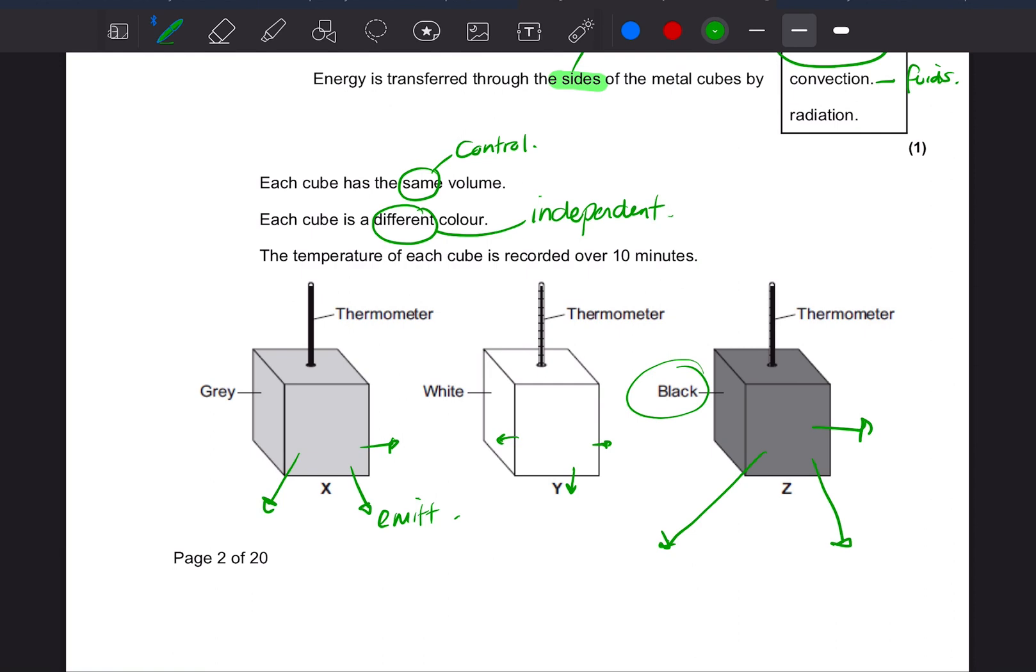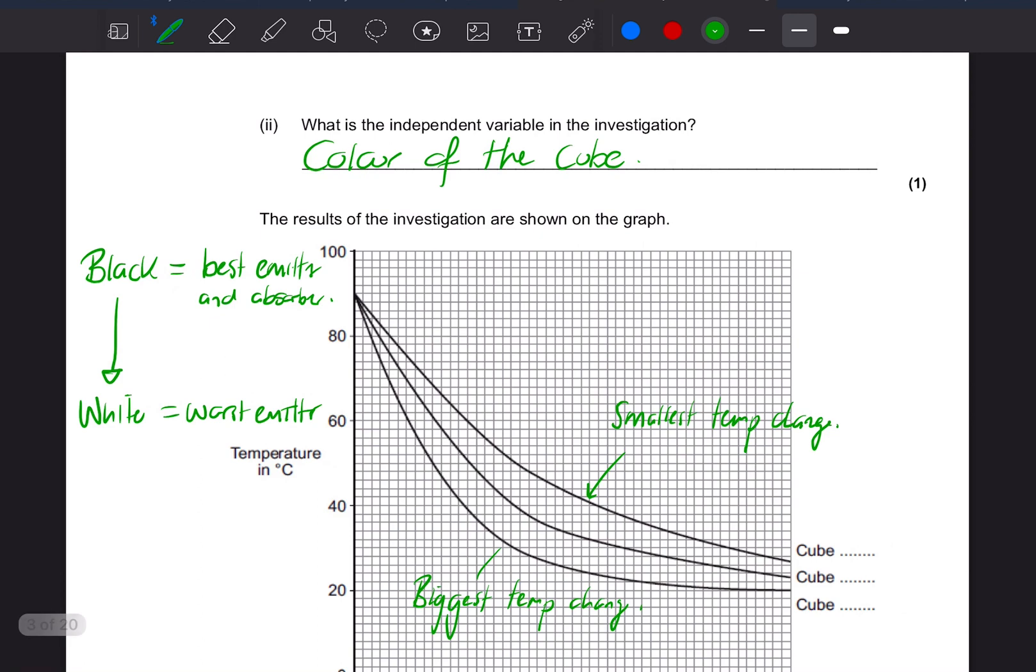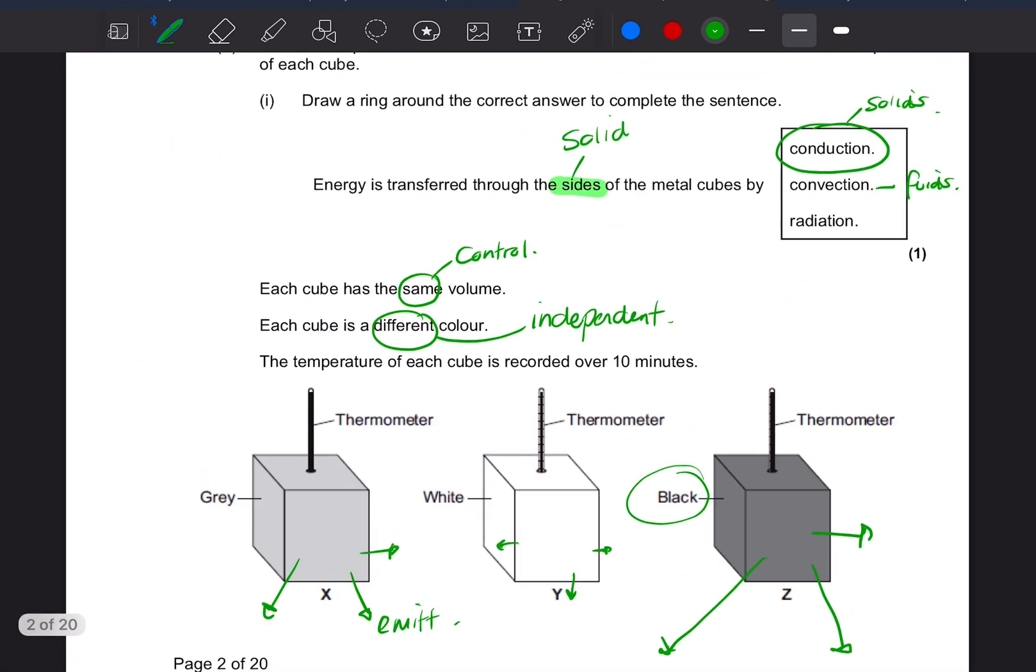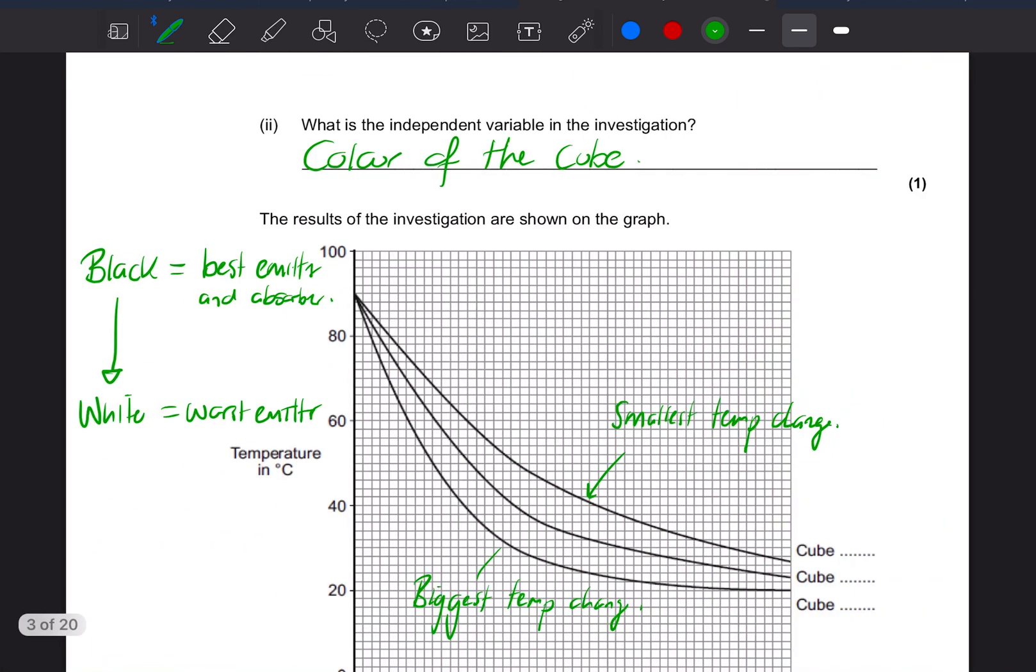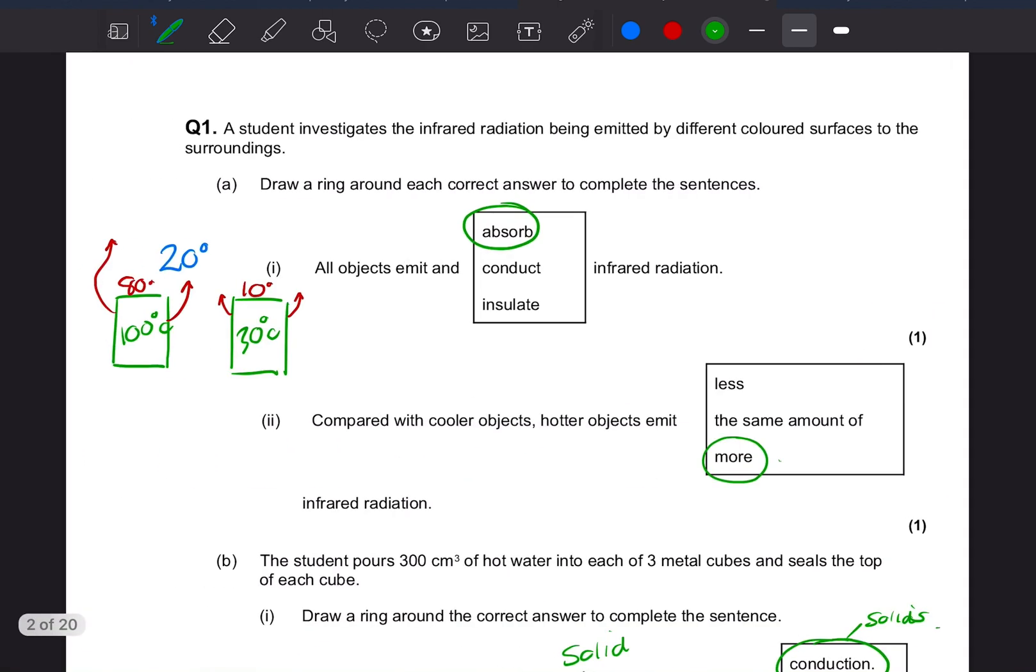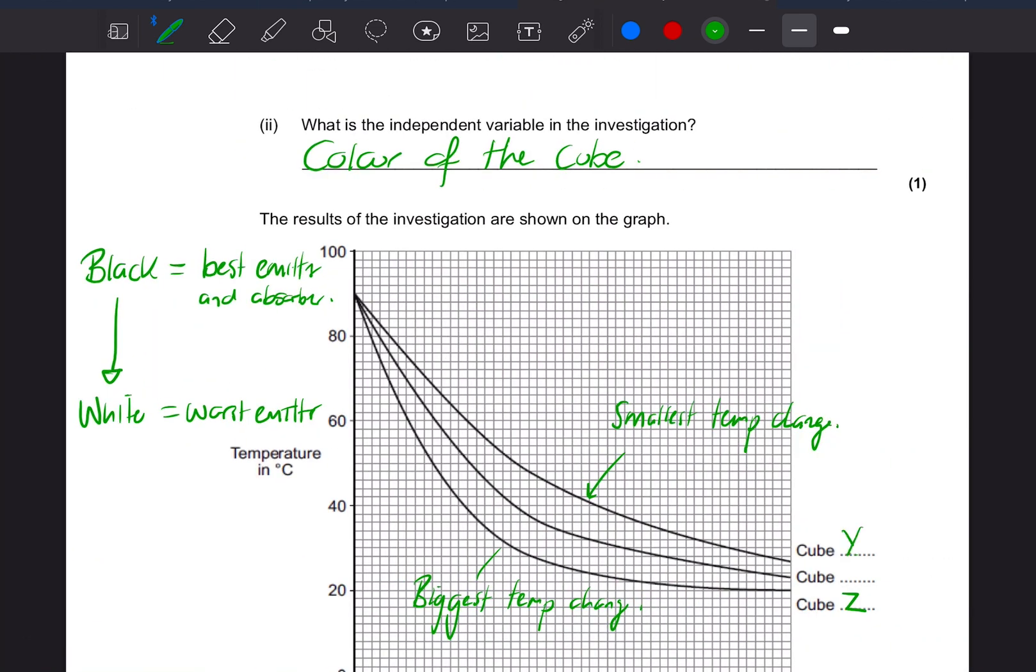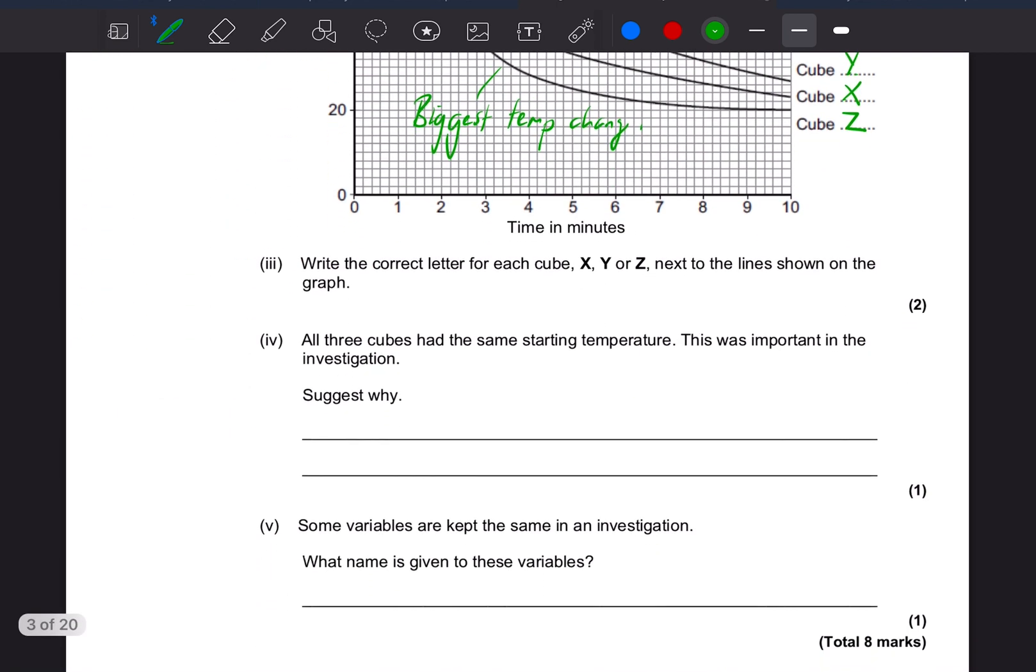So the biggest temperature change we can see down here is this bottom line. So if we look back at that, that is cube Z. So cube Z, biggest temperature change, this is the darkest color. The least is going to be the white one, so that's cube Y. So that's there, that one's gone from about 90 degrees to about 30-ish. And then the one must be the cube in the middle which is cube X, so we should have something like that.